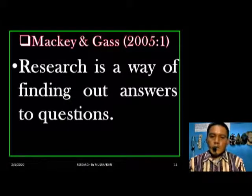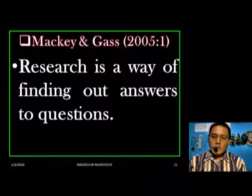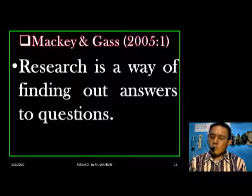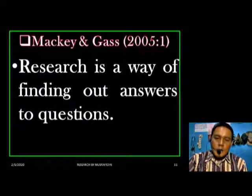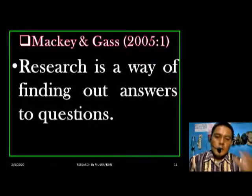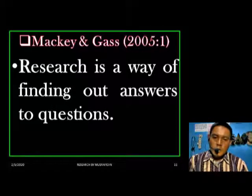Now, the definition given by McMillan and Schumacher is very simple: research is a way of finding out answers to questions. You have to know that research must have a problem or problems, and the problem itself is the main point of conducting research. The purpose of research is to answer or to find a solution to the research problem.